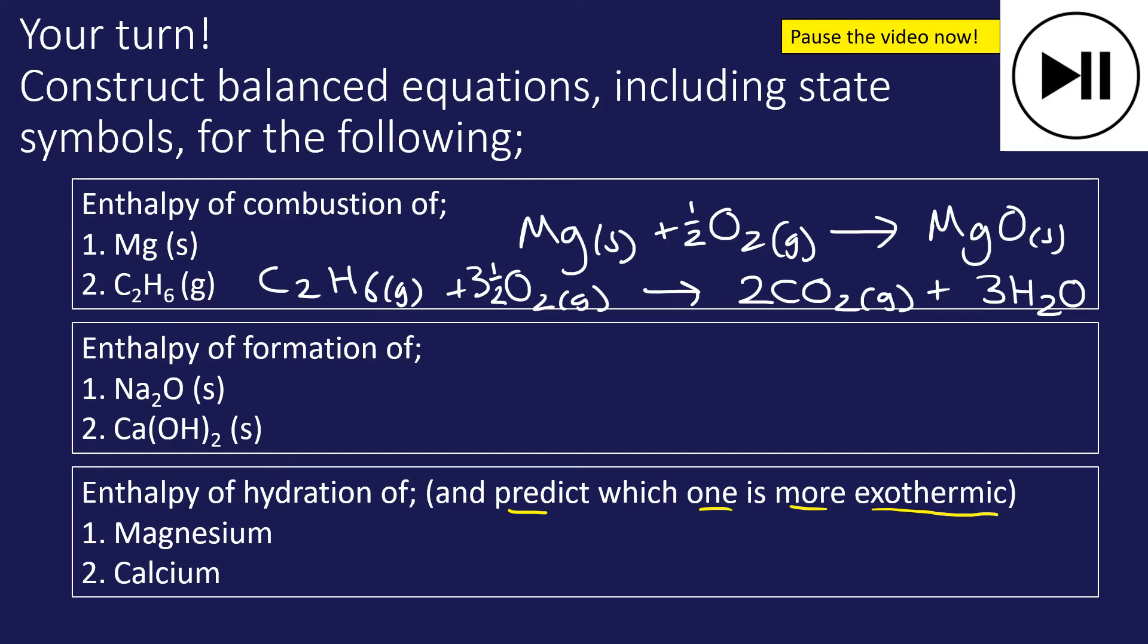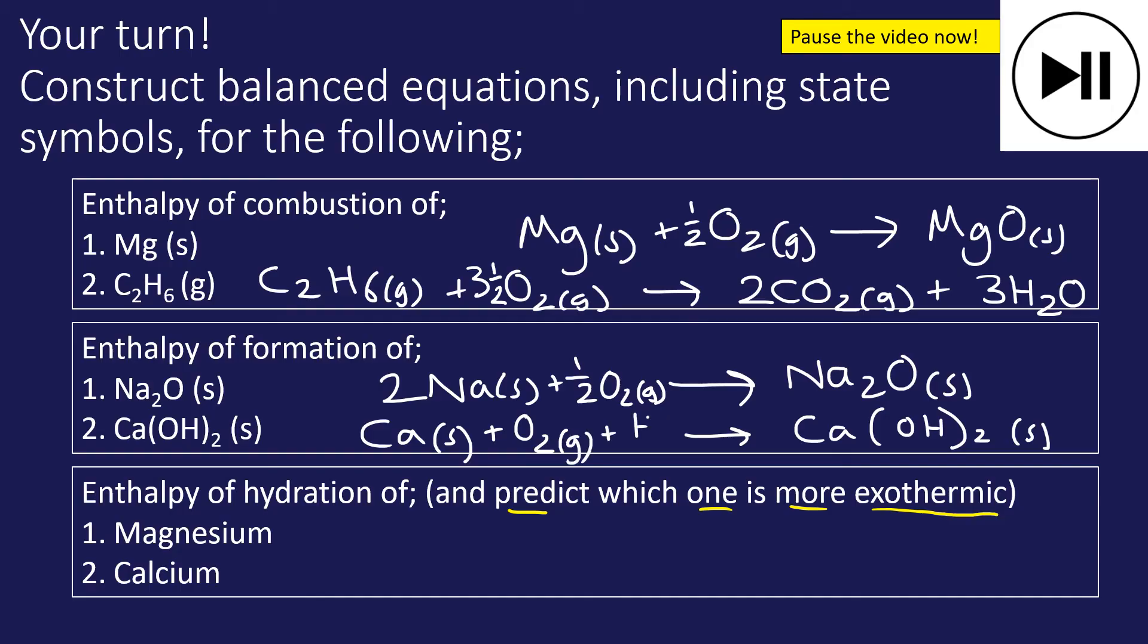Next one, formation. I'm going to form one mole of Na2O. I'm going to need two sodium metals and half O2 gas. The second one is tricky. I'm going to form calcium hydroxide from one mole of calcium, which is a metal, a solid. I'm going to need one mole of O2 gas because I've got two oxygen atoms on the right, and one mole of hydrogen H2 gas. That's complete.